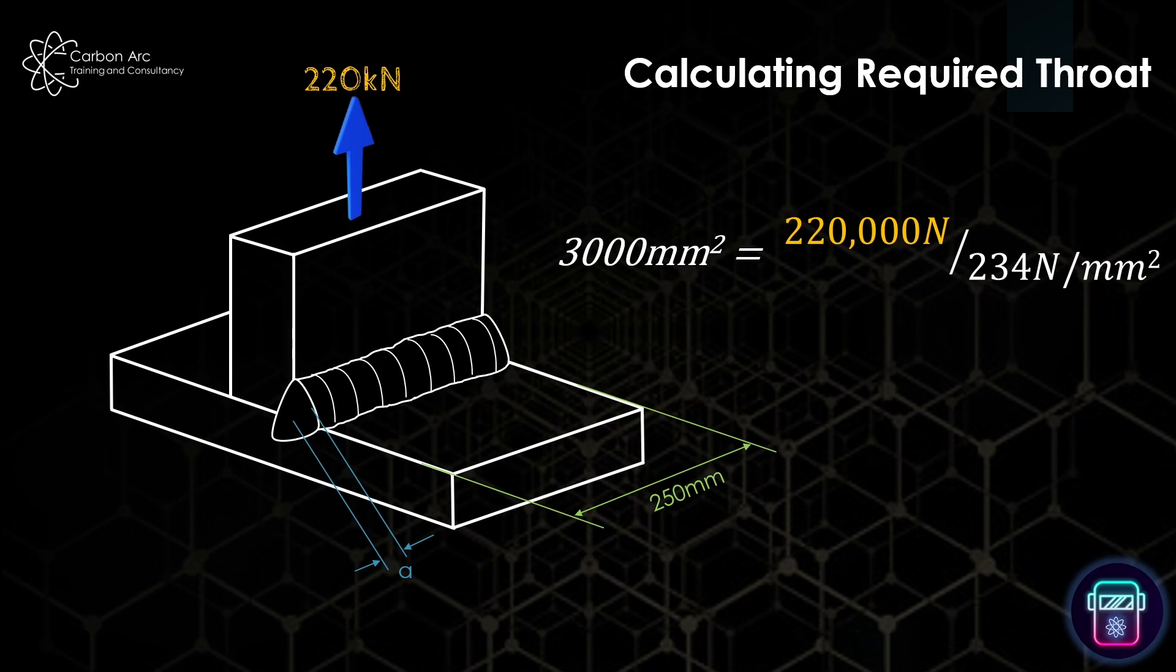Once you do that, that then gives me my full cross-sectional area of 3,000 millimeters squared, but I need to find the throat thickness. We know that the cross-sectional area is throat thickness times our length. So if I then take my 3,000 millimeters squared and divide it by my length, I should get a throat thickness. And then I get back to 12 millimeters.